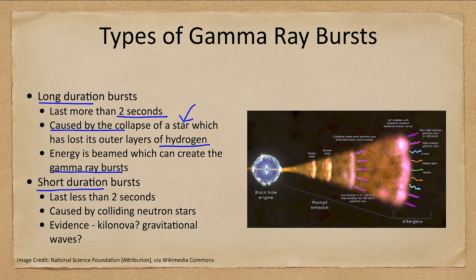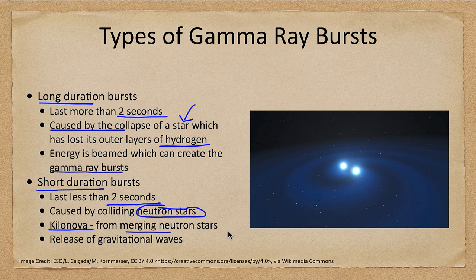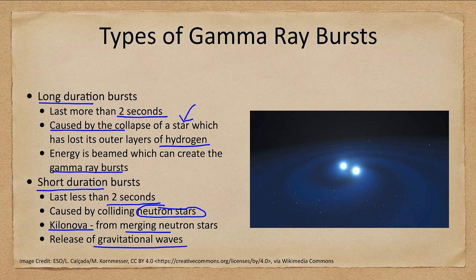Short duration gamma ray bursts, on the other hand, are less than two seconds in length. These are believed to be caused by neutron stars — we sometimes call this a kilonova — and that is from merging neutron stars as they spiral in together and eventually release gravitational waves as they combine and coalesce. If you remember from the discussion of what elements form, many heavy elements are often formed in collisions of neutron stars such as these. So those short duration gamma ray bursts can also produce a lot of the elements that we see in the universe.